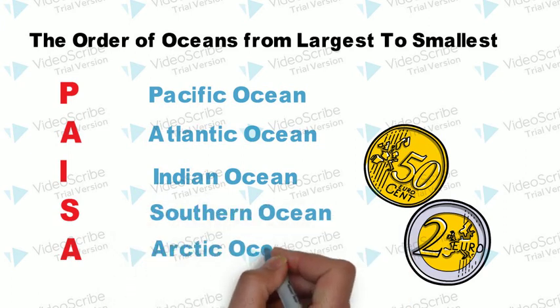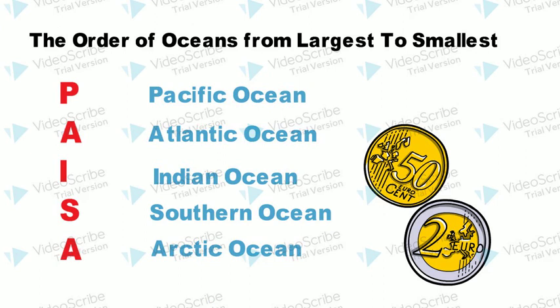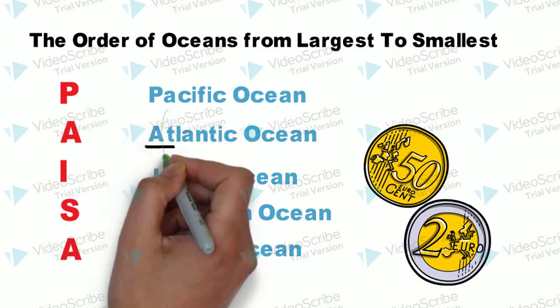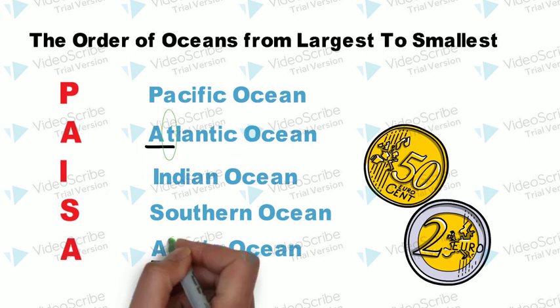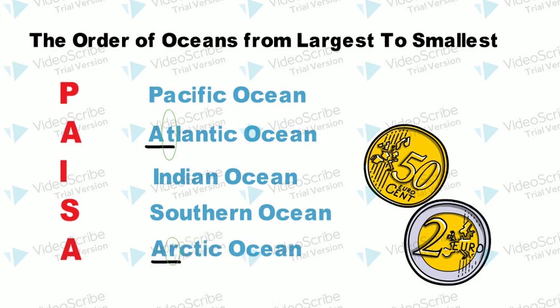Since there are two A's — for Atlantic and Arctic Ocean — to remember that Atlantic is greater than Arctic: the letter T in AT-lantic is greater than the letter R in AR-ctic. So Atlantic is greater than Arctic. Thank you for watching, see you in the next video. Till then, bye bye and take care.